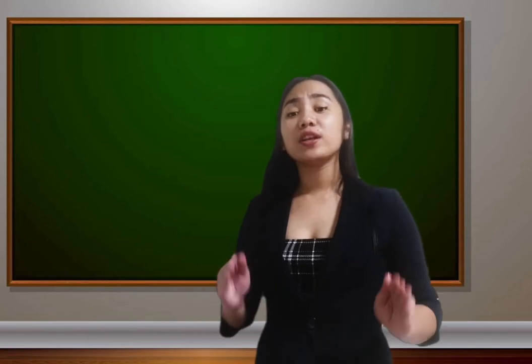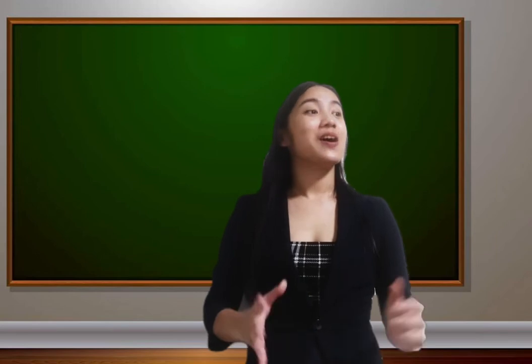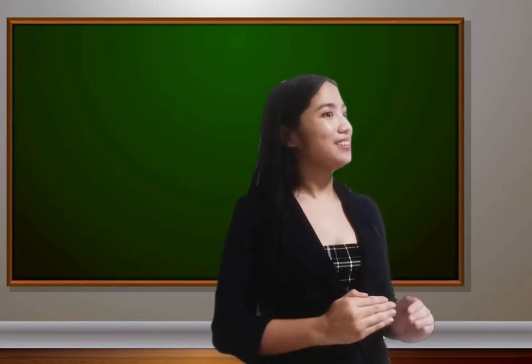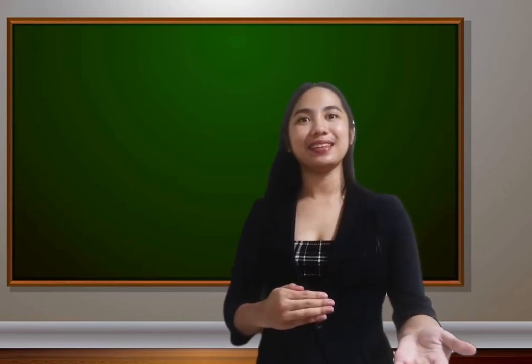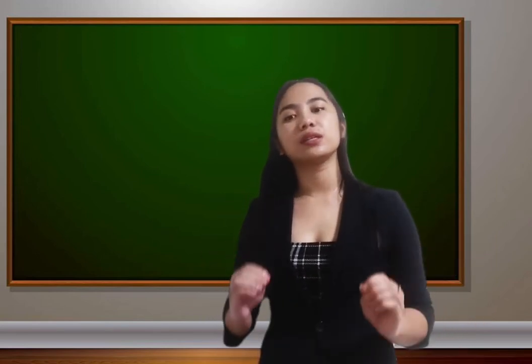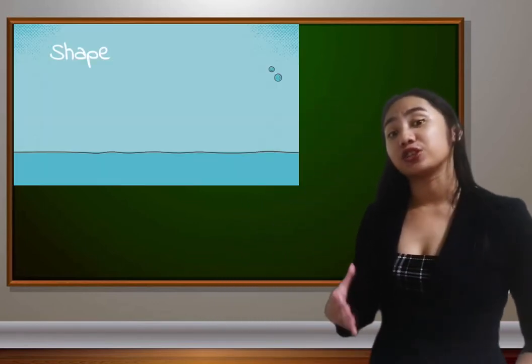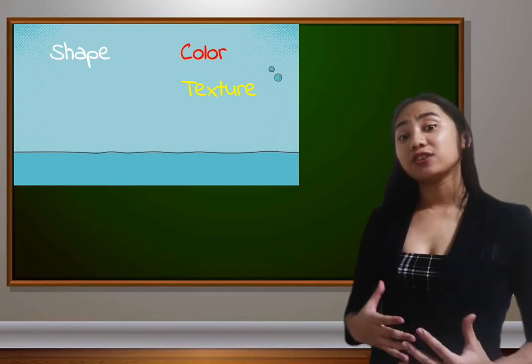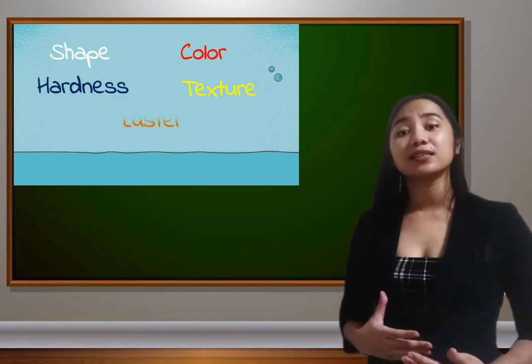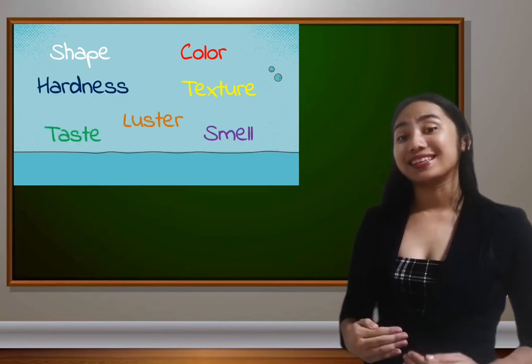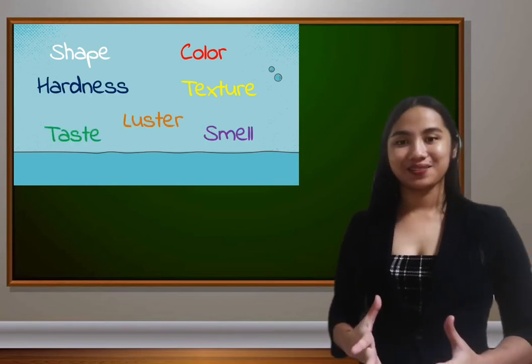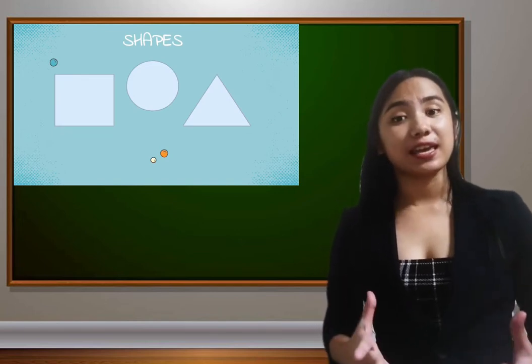Now, what are the observable characteristics that you have listed down? Those are really good observations. Solids can have different shapes, color, texture, hardness, luster, taste, and smell.